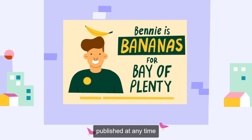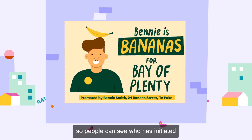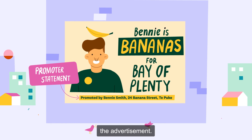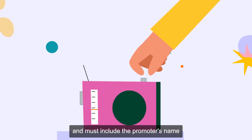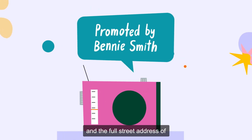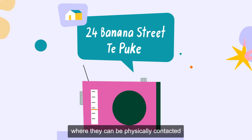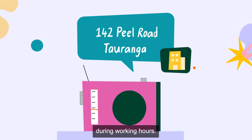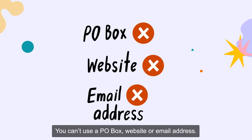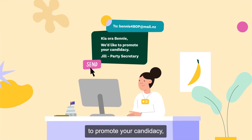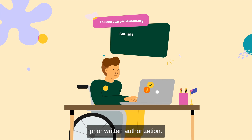All election advertisements published at any time need to have a Promoter Statement so people can see who has initiated the advertisement. The Promoter Statement needs to be clearly visible or audible and must include the promoter's name and the full street address of either the place they usually live or another place where they can be physically contacted during working hours. You can't use a PO Box, website or email address. If someone else wants to promote your candidacy, they can only do this with your prior written authorisation.